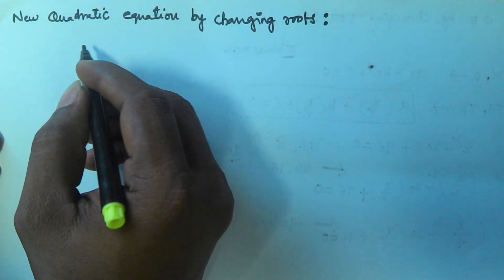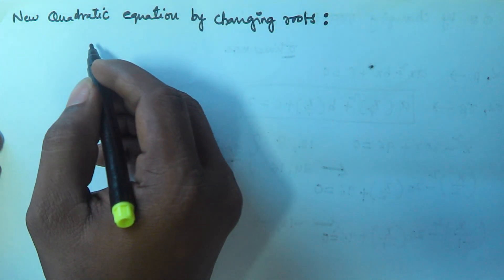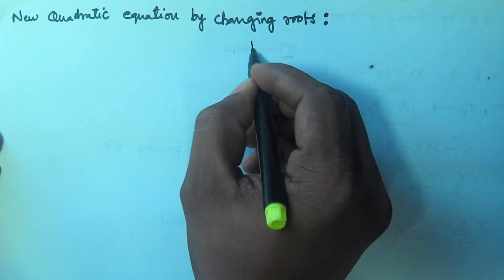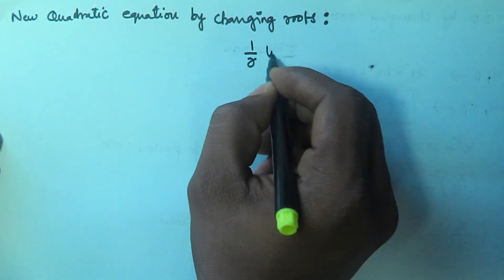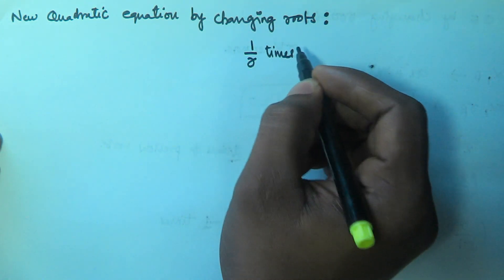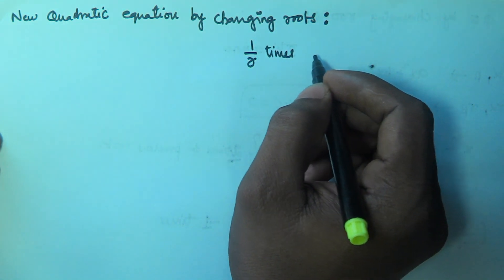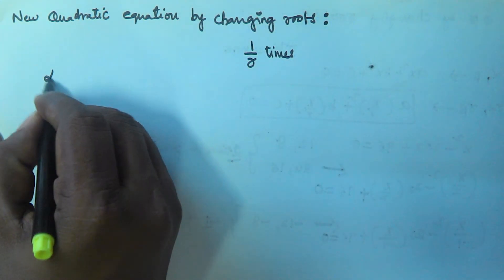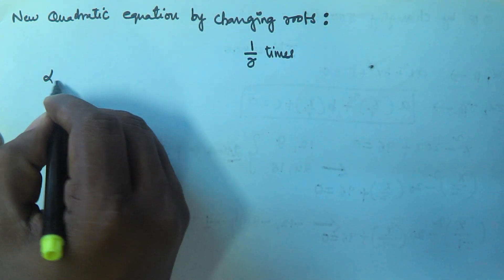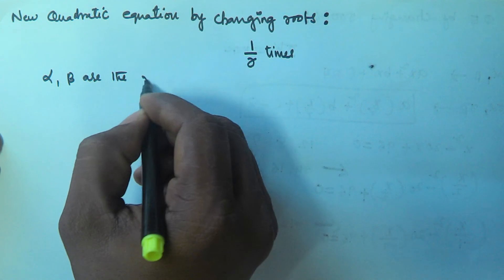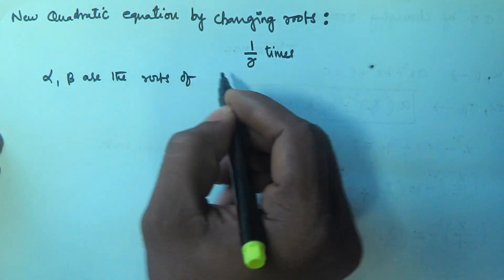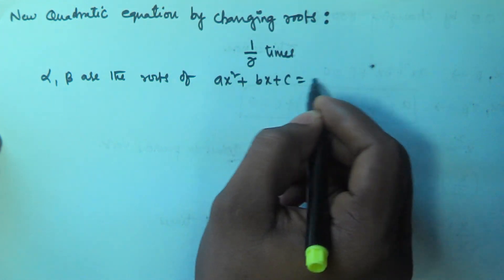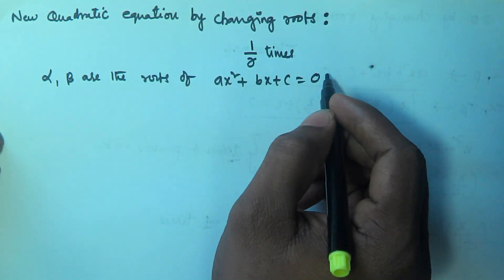Hello friends. In this video we will see how to find the new quadratic equation if the roots of that equation are 1 by r times the roots of the given equation. Let us assume alpha and beta are the roots of AX squared plus BX plus C equals zero.